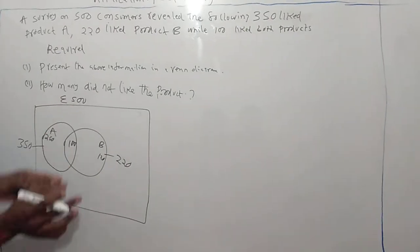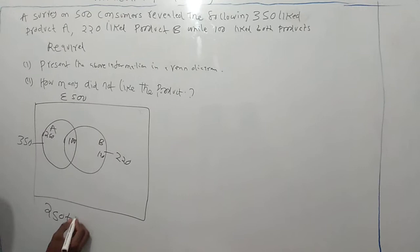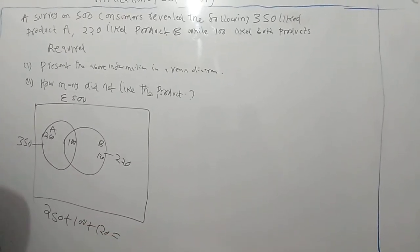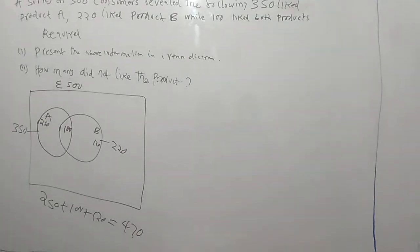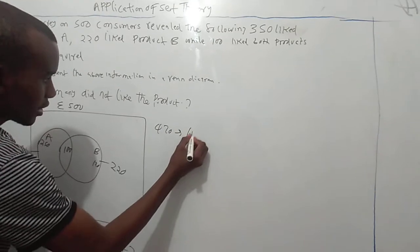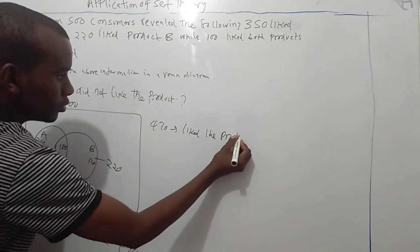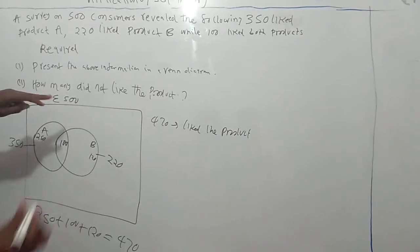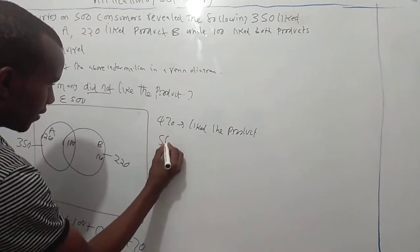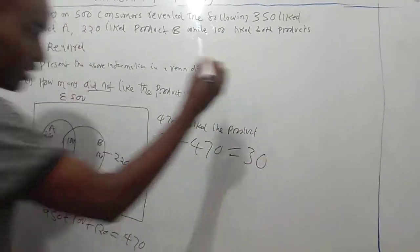It means the one who likes the product is 250 plus 100 plus 120. If you add this, you will get 470. It means 470 like the product. But the question is asking, how many do not like the product? For us to get that, we take the total 500 minus 470, which will give us 30.